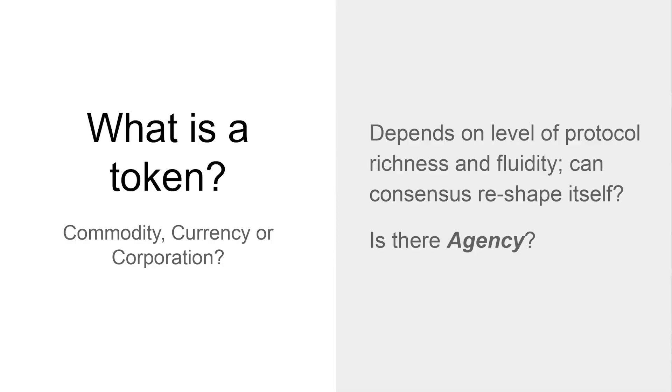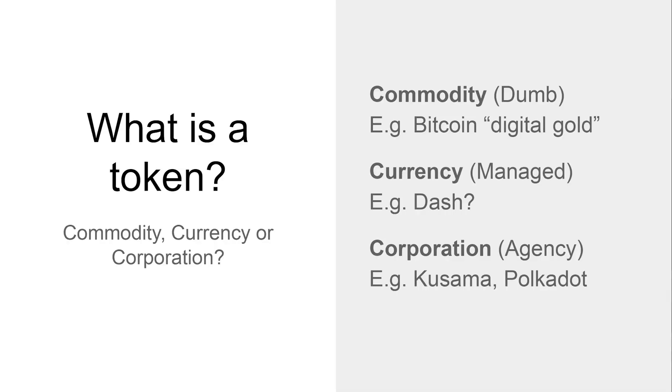So what's a token? We need to really dive into this in order to understand how token economies are able to interact with each other at a sovereign level. Token economies have been described in one of the three C's: commodity, currency, or corporation. To pin a protocol on one of these depends on the fundamental protocol of the token itself, not any derivative protocols where token derivatives might live or be exchanged. Understanding whether a token has agency is the critical difference between the three.